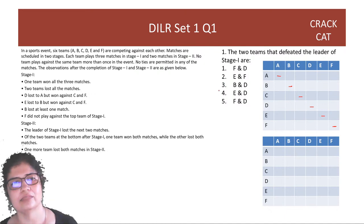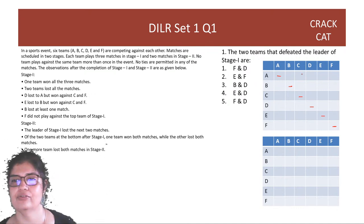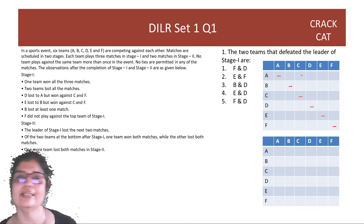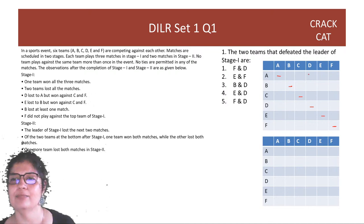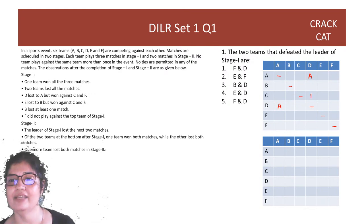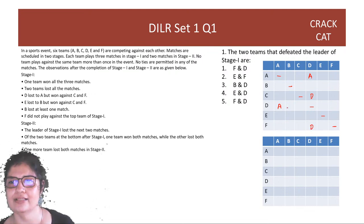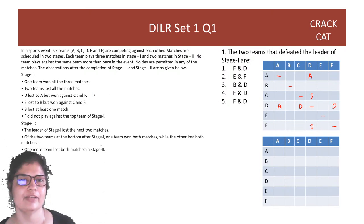One team won all three matches; two teams lost all matches. D lost to A but won against C and F. So A won the A vs D match, and D won against both C and F. Let me fill the row and the column to avoid confusion.